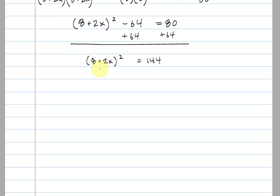Now that we have isolated the squared item, we're going to square root both sides. Remember, whatever we do to one side, we have to do to the other side. On the left-hand side, the square root and the square cancel each other out, leaving us with 8 plus 2x.